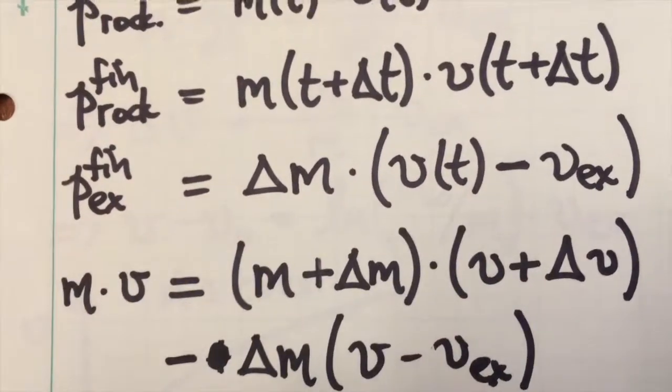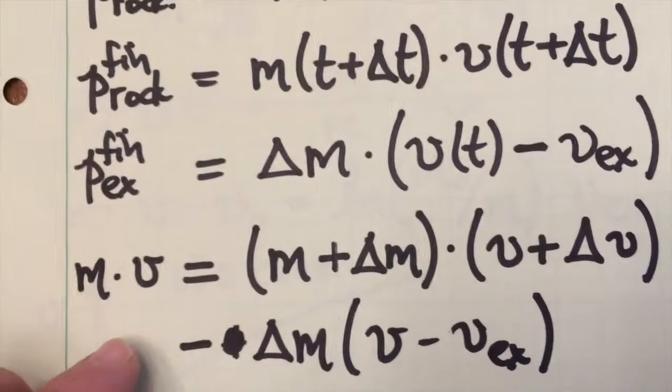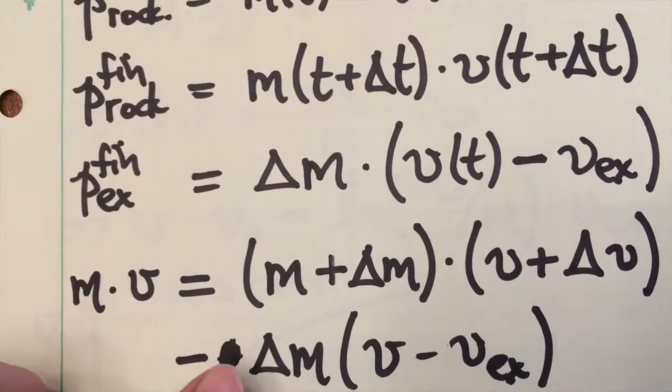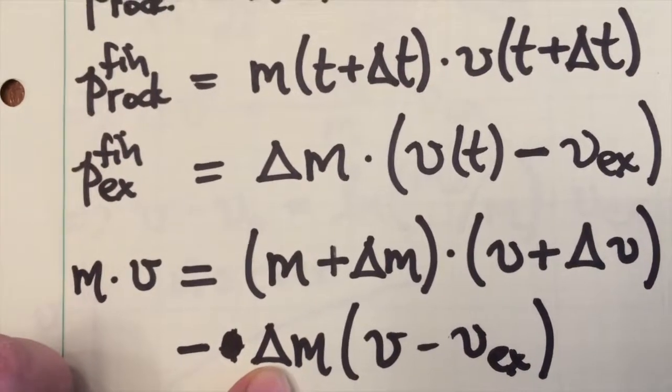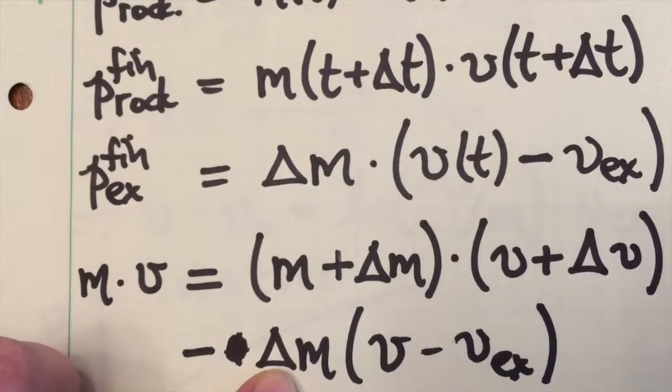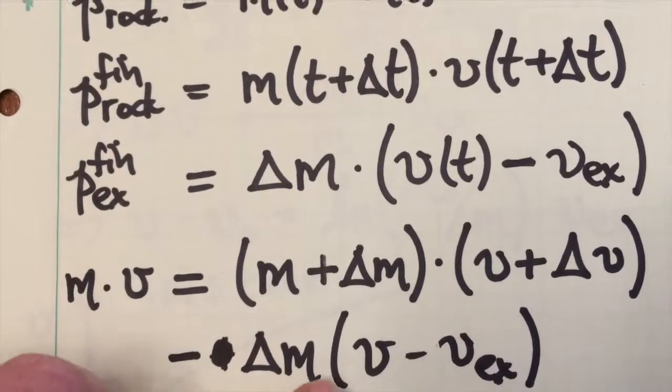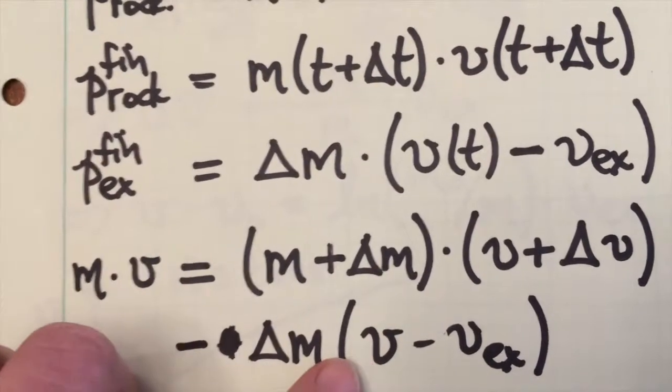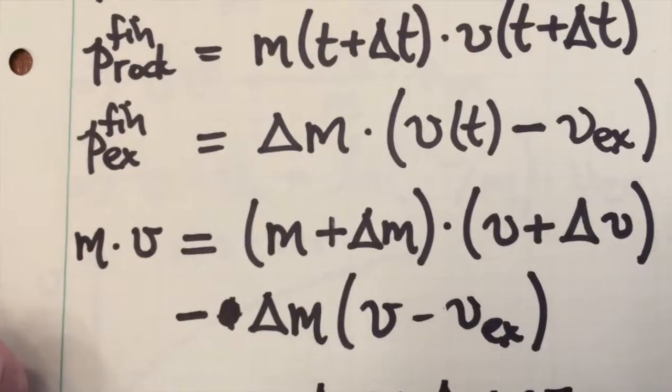So this is the final mass of the rocket after the exhaust has been ejected times the velocity of the rocket plus delta v. That delta v is going to turn out to be a positive number. And then we need to subtract from this delta m. Remember that delta m is a negative number, so to get a momentum for the exhaust, we multiply by a negative. So minus delta m times the velocity with which the exhaust is leaving the rocket as measured in an inertial frame.